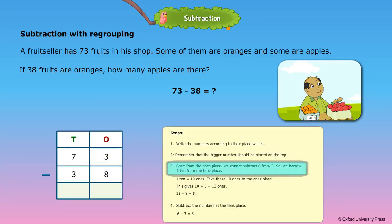Step 3: Start from the ones place. We cannot subtract 8 from 3, so we borrow one ten from the tens place. One ten is equal to ten ones. Take these ten ones to the ones place. This gives 10 plus 3 equal to 13 ones.